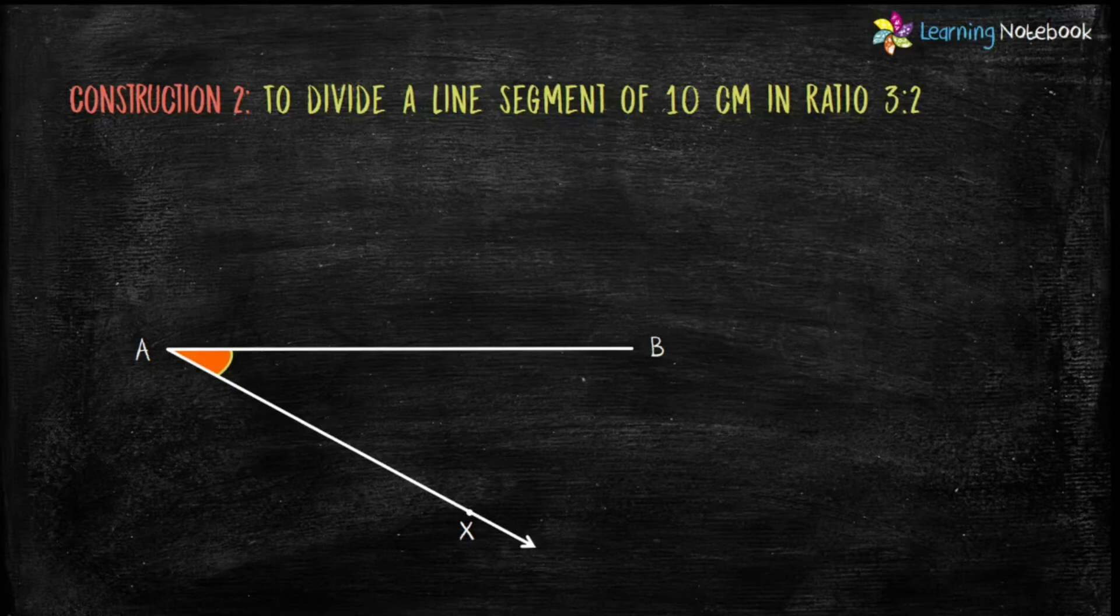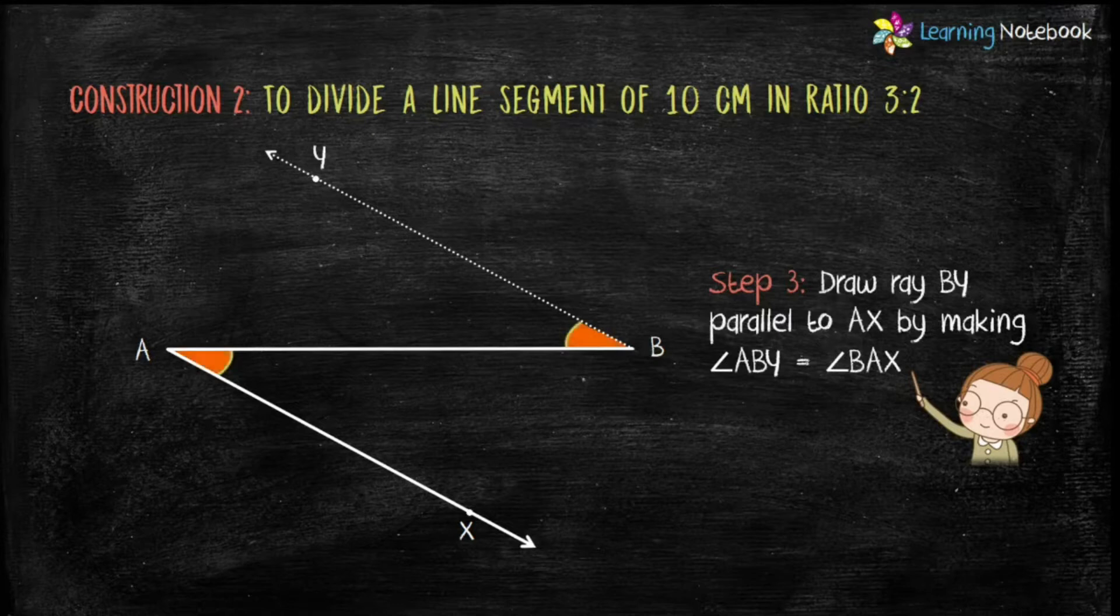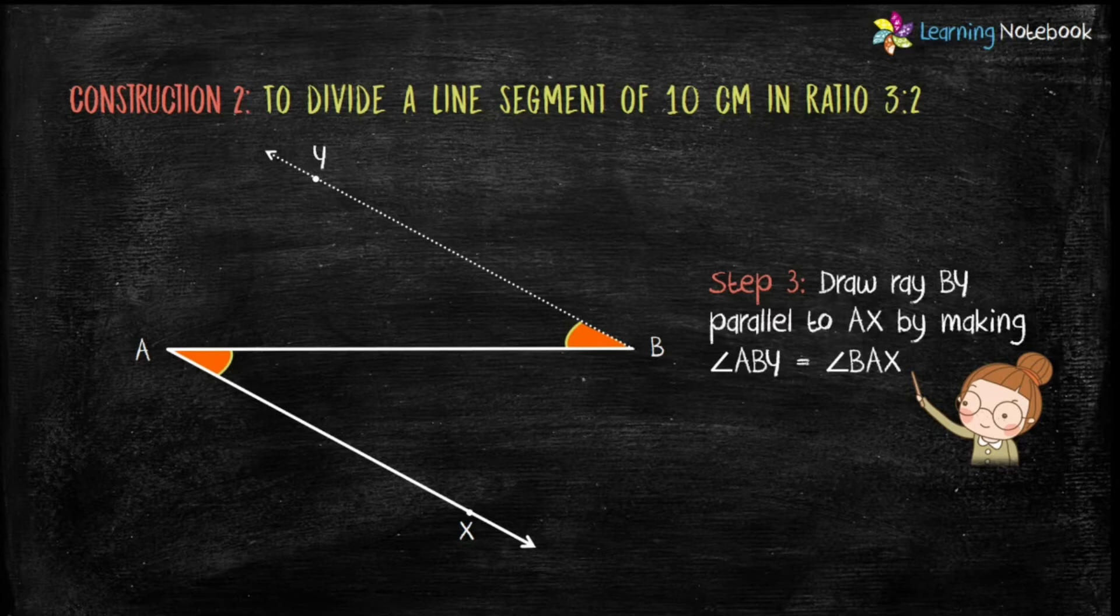Step 3 is draw ray BY parallel to AX by making angle ABY equals to angle BAX. So, let's see how to draw ray BY.